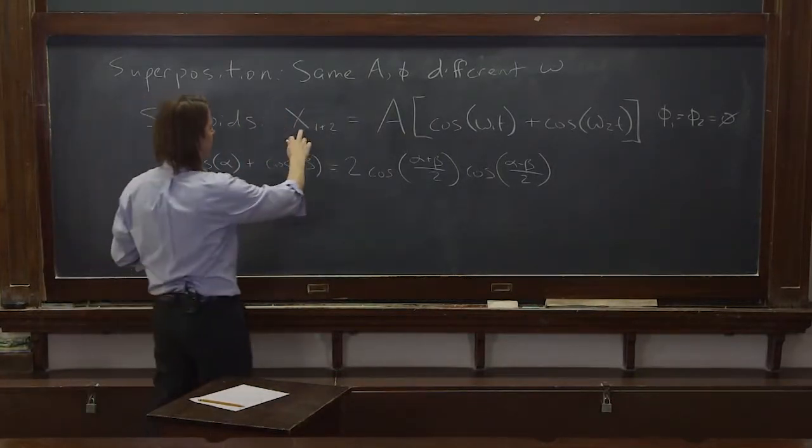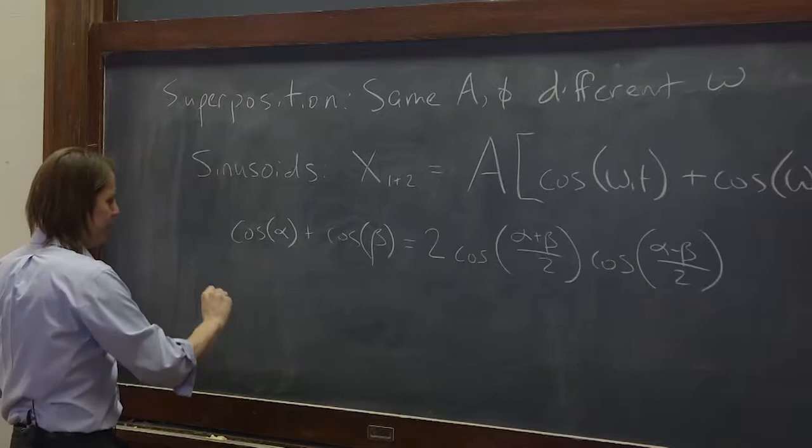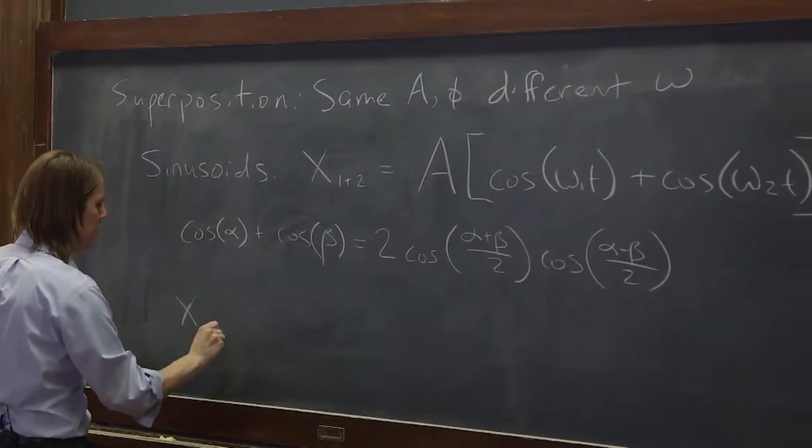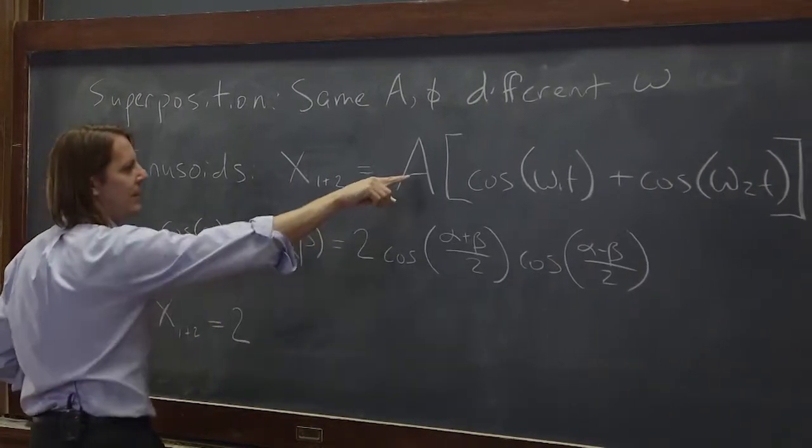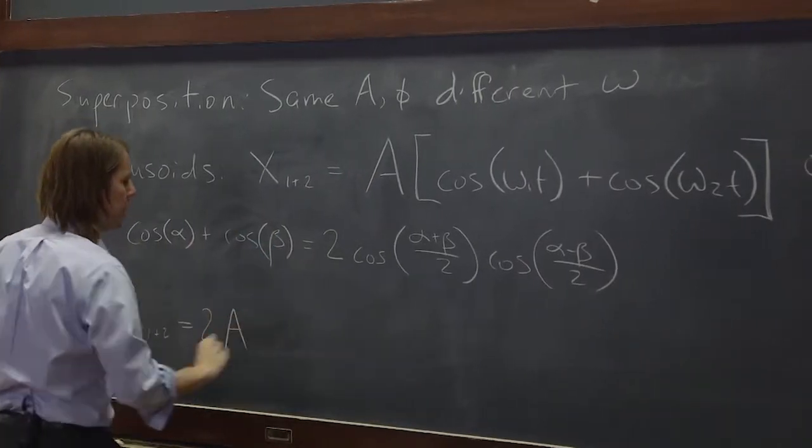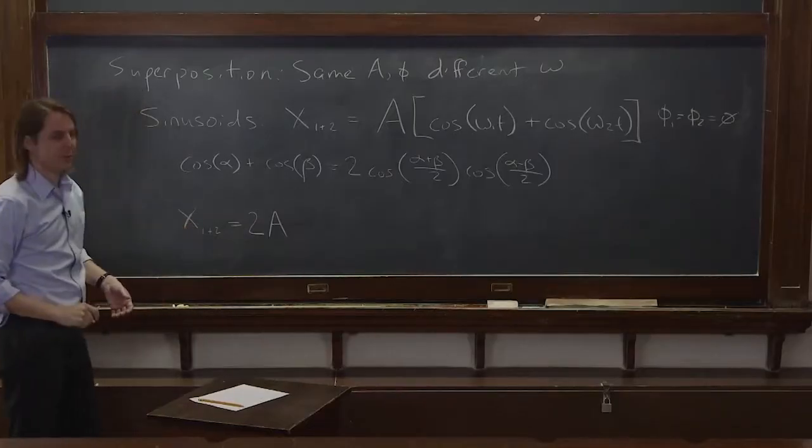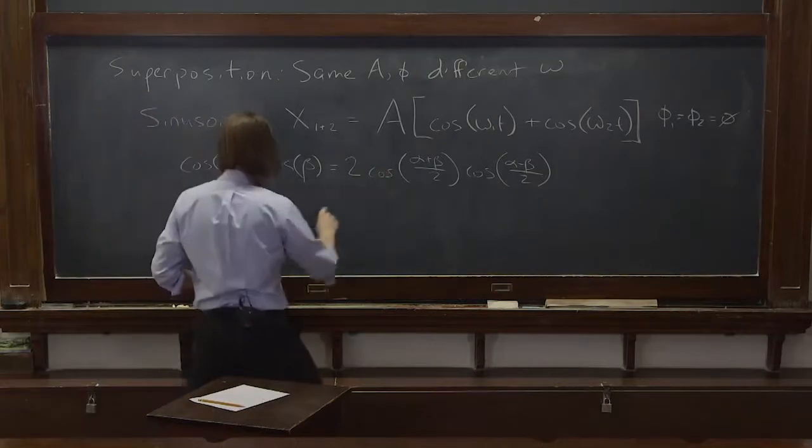Okay, so we just start plugging in. We say x1 plus x2 must therefore be 2 has to be there, and the amplitude is just along for the ride, so twice the amplitude, that's the first thing we learn, times the cosine.